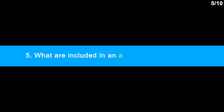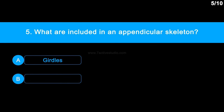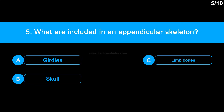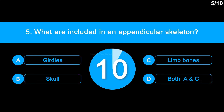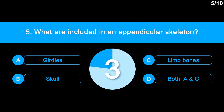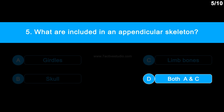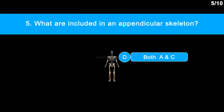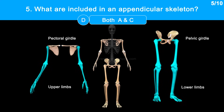Question 5: What is included in the appendicular skeleton? Option A: girdles. Option B: skull. Option C: limb bones. Option D: both A and C, girdles and limb bones. The appendicular skeleton is composed of girdles and limbs on either side of the central axis. The arms and legs are called the upper and lower limbs respectively.